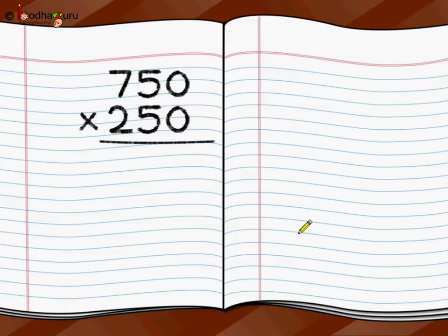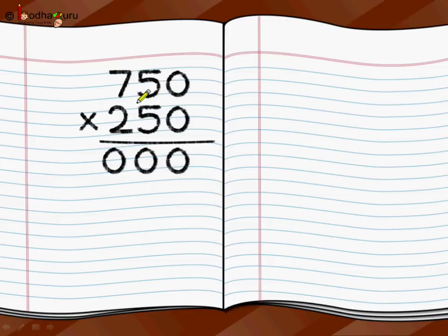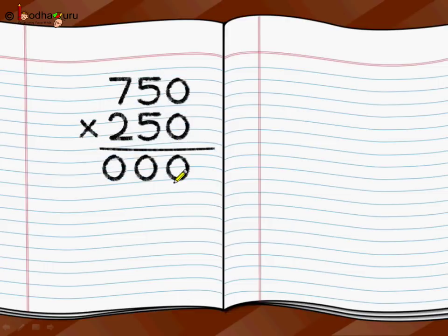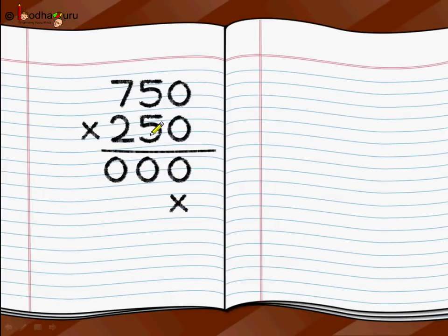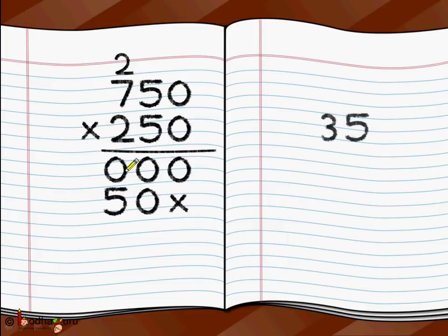750 rupees per garment and 250 such garments — we find the total money by multiplying. We write 750 as the multiplicand, multiplied by 250 as the multiplier, and draw an underline. First we do 750 multiplied by 0: 0 multiplied by 0 is 0, 0 multiplied by 5 is 0, 0 multiplied by 7 is 0 — anything with 0 is 0. Next, 5 multiplied by 0 is 0, 5 multiplied by 5 is 25, so we write 2 as carry over on top of 7. Then 5 multiplied by 7 is 35, plus 2 carry over is 37, so we write 37 here.